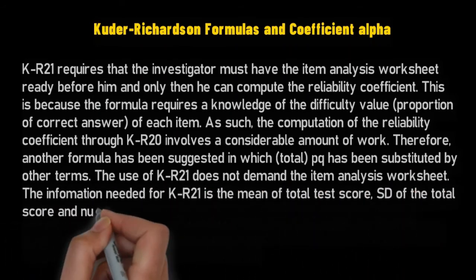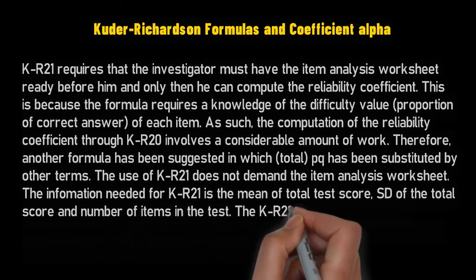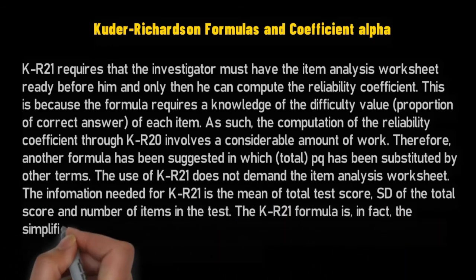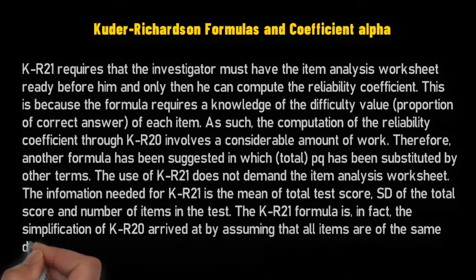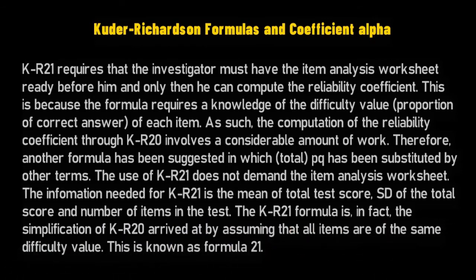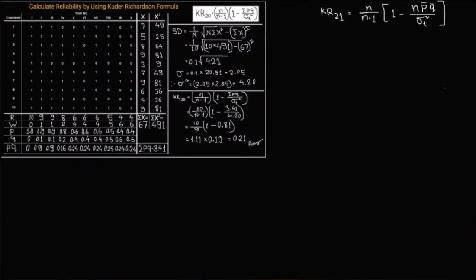Therefore another formula has been suggested in which total summation pq has been substituted by other terms. The use of KR21 does not demand the item analysis worksheet. The information needed for KR21 is the mean of total test score, variance of the total score, and number of items in the test. The KR21 formula is in fact the simplification of KR20.